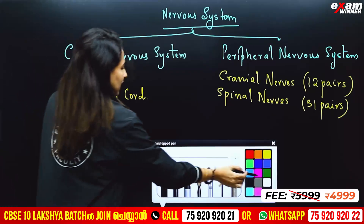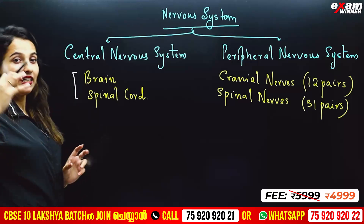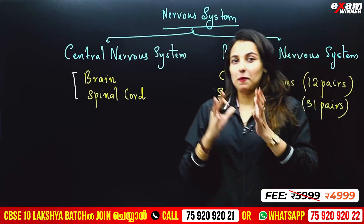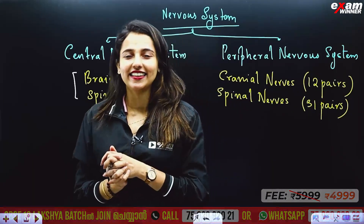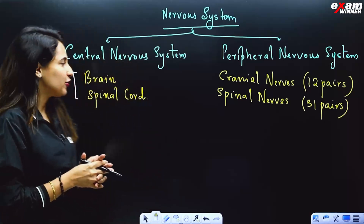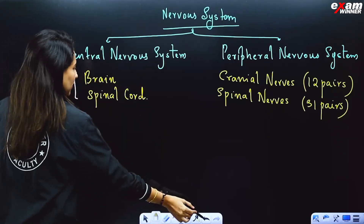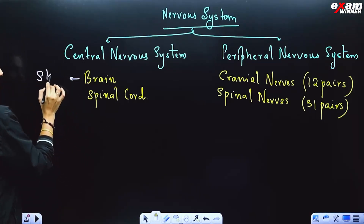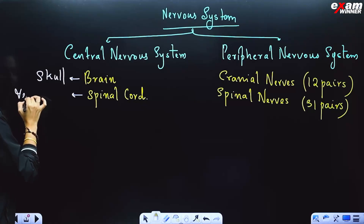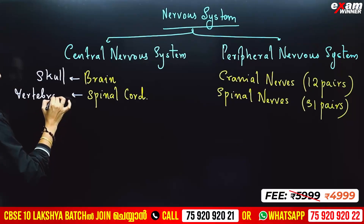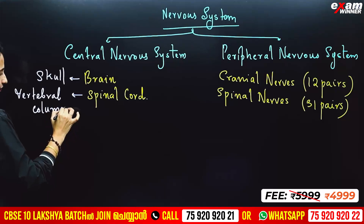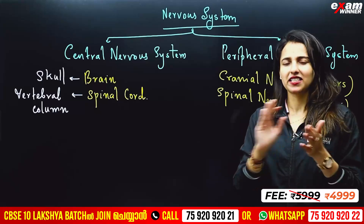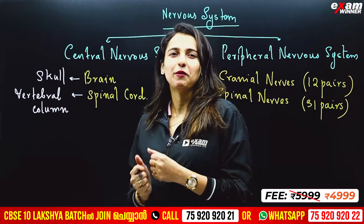The central part of the brain is very important, and that is why we need protection. We have to protect the brain and the vertebral column. Just like a mobile phone has a screen cover and a back cover for protection, our brain and spinal cord also need protection.